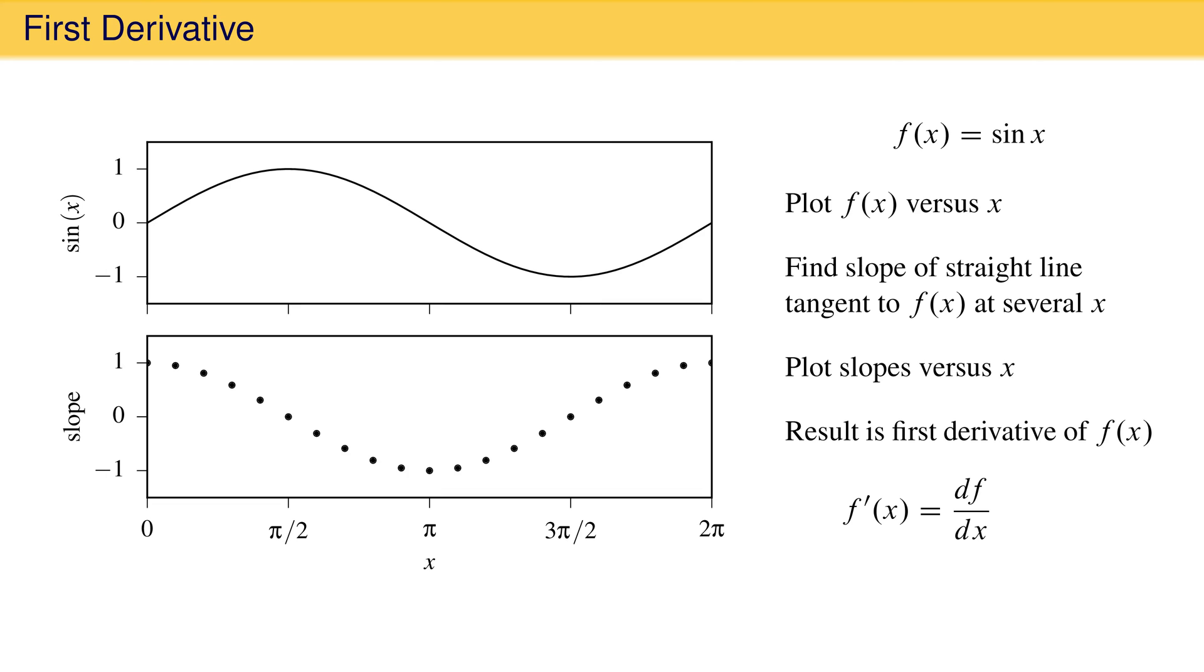The collection of slopes in the bottom plot define a function which you might recognize as cosine x. Cosine is therefore the first derivative of sin x, which is written as f prime equals df/dx equals cosine x. You probably already knew that cosine is the first derivative of sin x, but it is still useful to be able to analyze a function's derivative graphically.